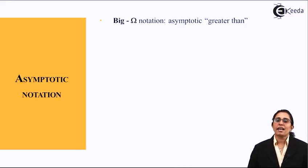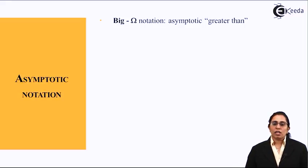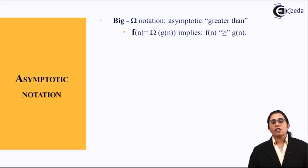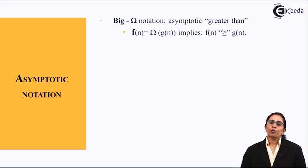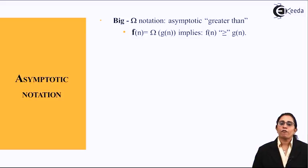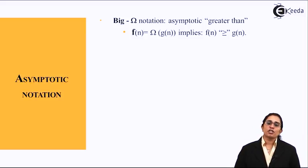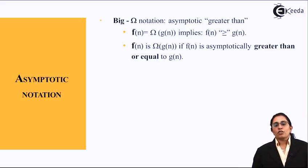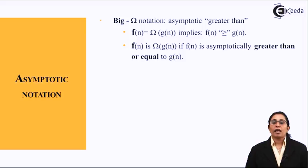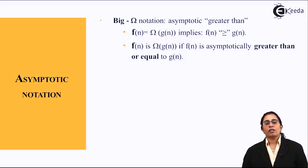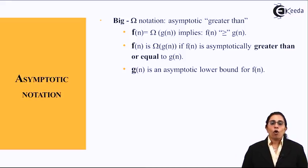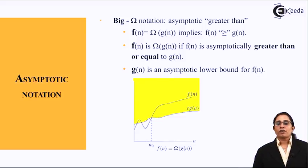Big Omega notation defines an asymptotic lower bound. It is signified as f(n) = Ω(g(n)), meaning the function grows at least as fast as g(n). It implies f(n) ≥ g(n). We say f(n) is Ω(g(n)) if f(n) is asymptotically greater than or equal to g(n), and g(n) is an asymptotic lower bound for f(n).